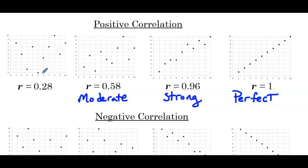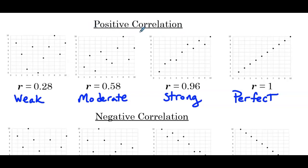The last example has r equals 0.28. The points are definitely more spread out, so we'll define this as weak positive correlation. The one thing they all have in common is that if we were to draw in the line of best fit for all four scatter plots, our line of best fit would have a positive slope, which is why they fall under the positive correlation category. The slope of the line of best fit tells us the sign of the correlation, and the value tells us how strong or weak that correlation is.